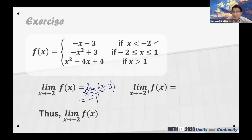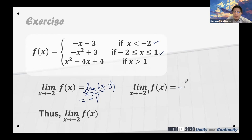Just be very careful with the values. For the limit from the right of negative 2, we use the second condition — all those values greater than negative 2. Substituting: negative 2 squared is 4, negative 4 plus 3 gives us negative 1.